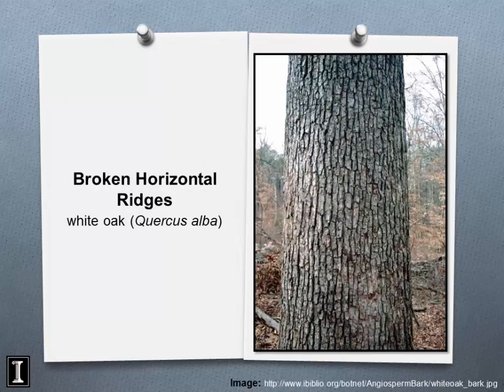Here's an example of Quercus alba — white oak — showing the horizontal broken ridge structure. It's not deeply furrowed, but you get these little broken horizontal lines that interrupt the long ridge. This is a very common bark appearance on mature white oak.